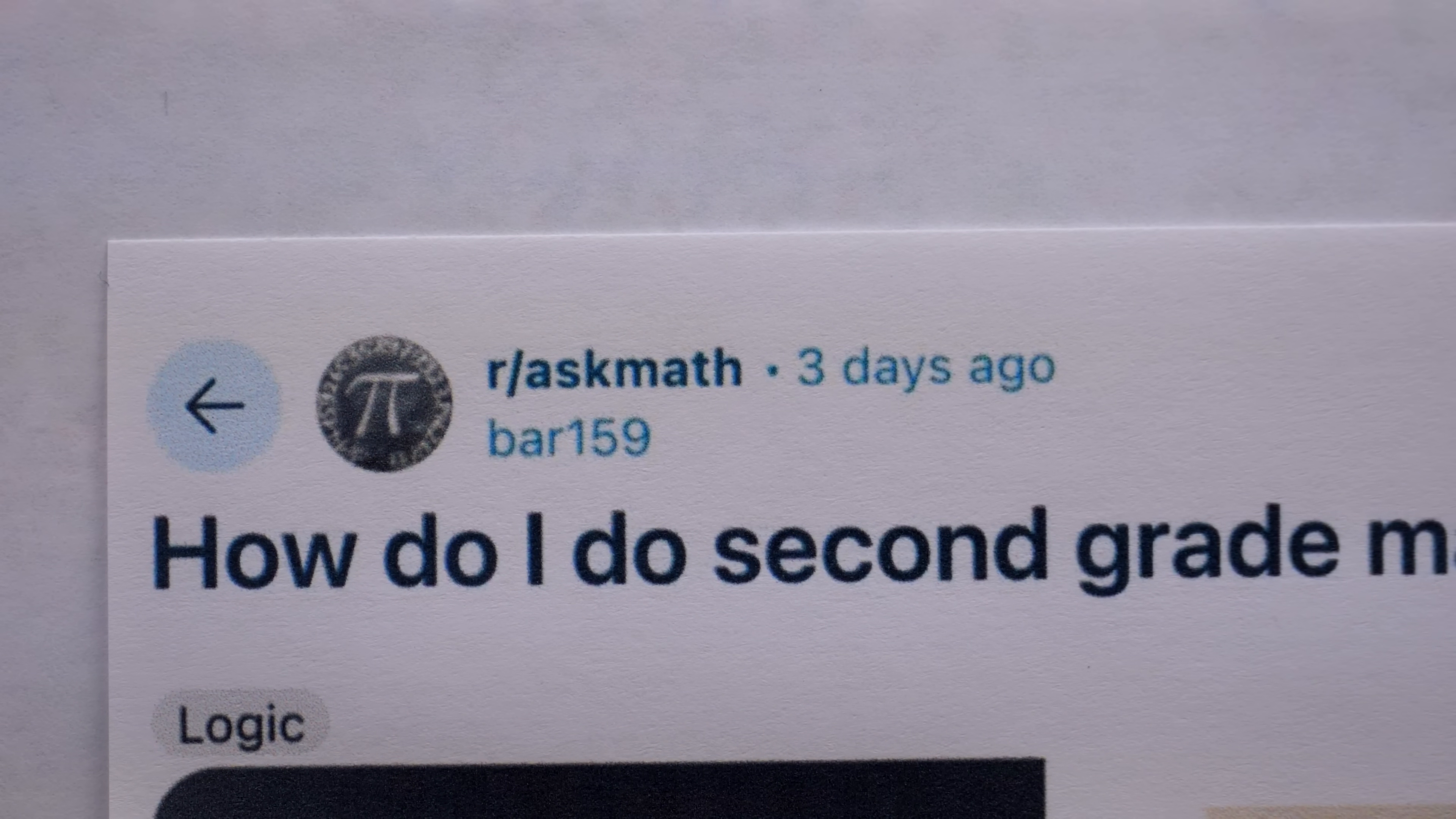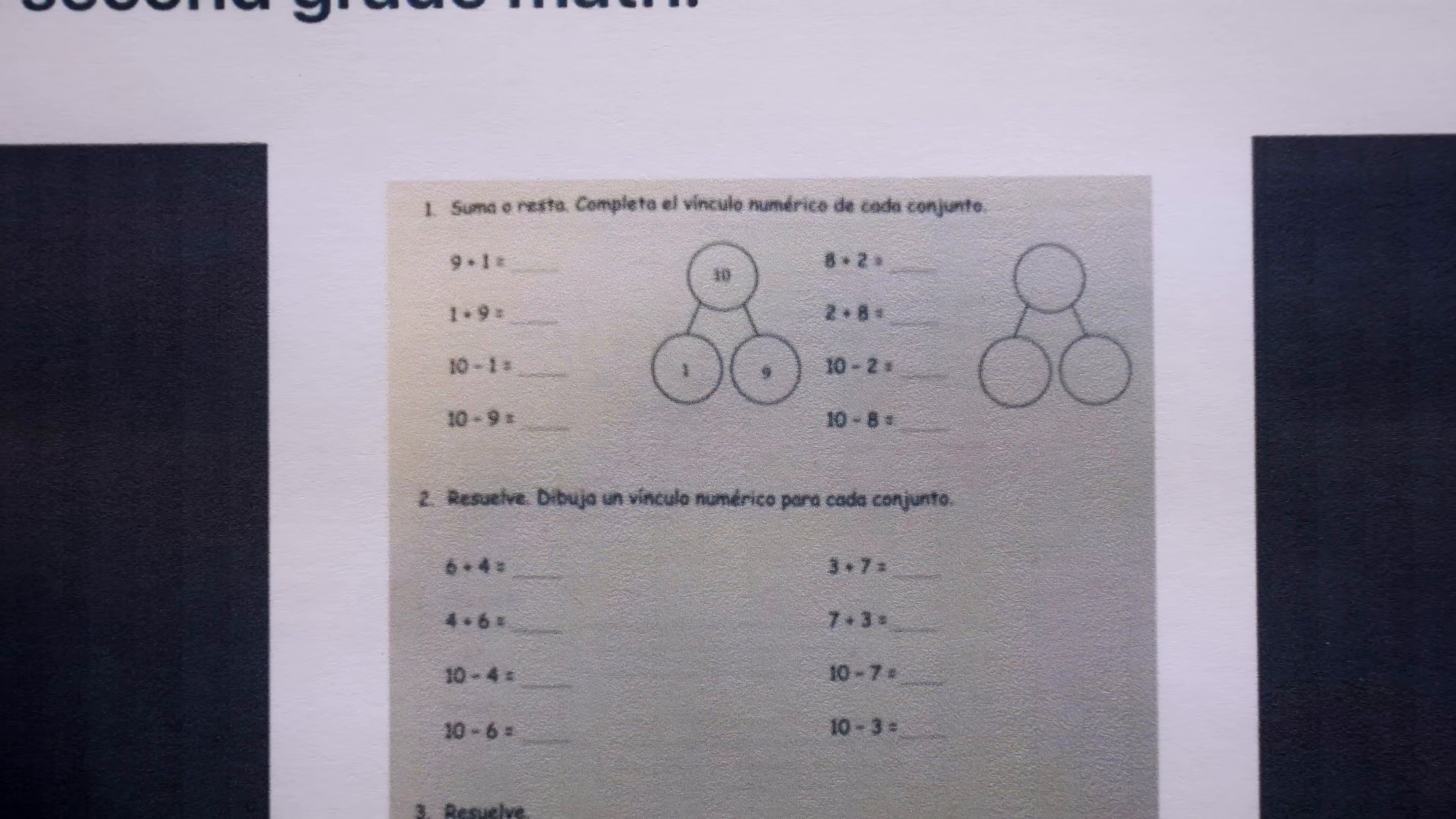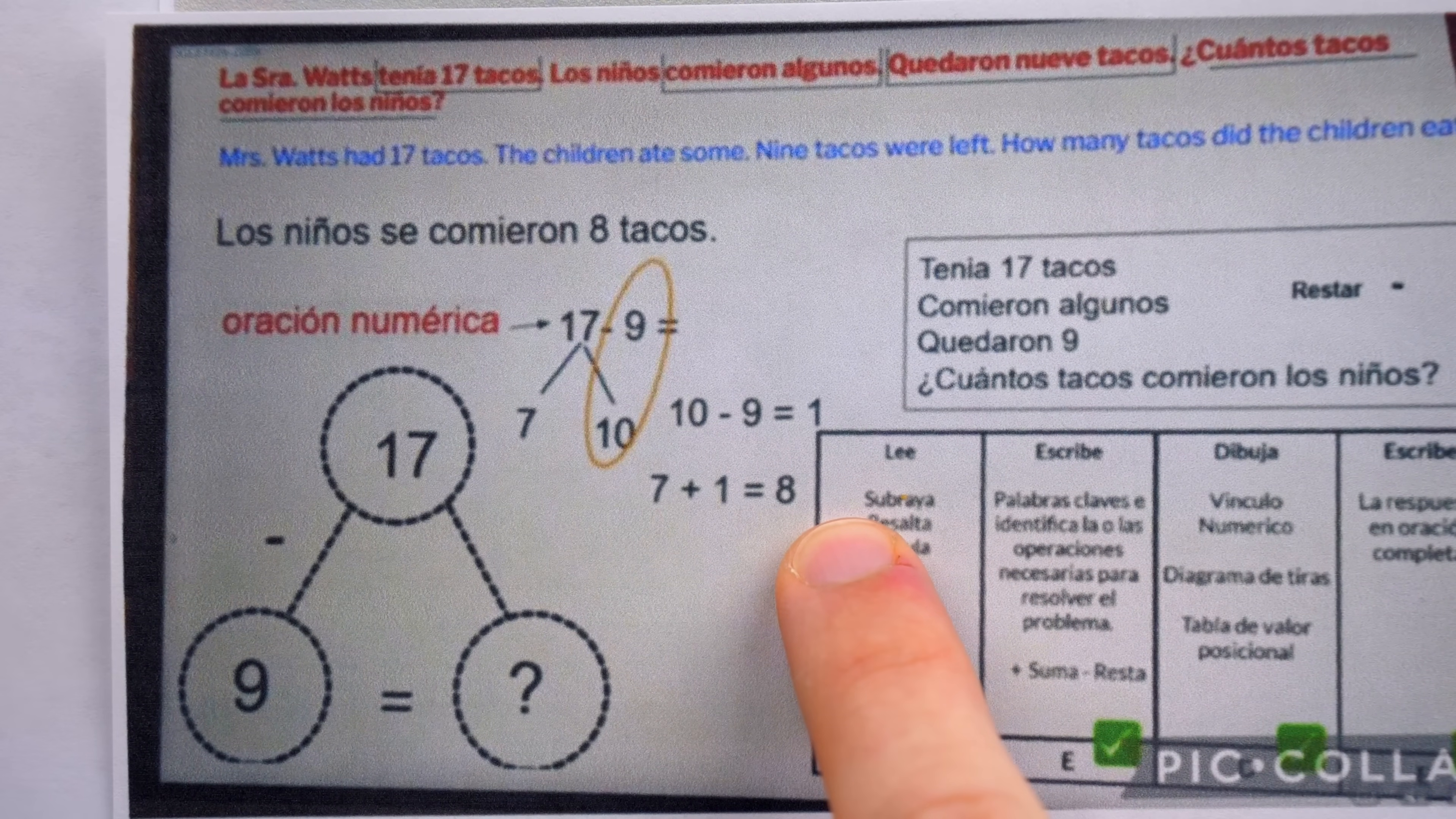So it sounds like the teacher sent this picture as some sort of follow-up to assist in the completion of the homework. Well, bar 159, the bad news is that the math here that you don't understand is just subtraction and addition. But the good news is that it's just subtraction and addition. Now the worksheet itself I can see as being a little bit confusing, but the bottom part that the teacher sent to help them do the homework, this is a disaster.